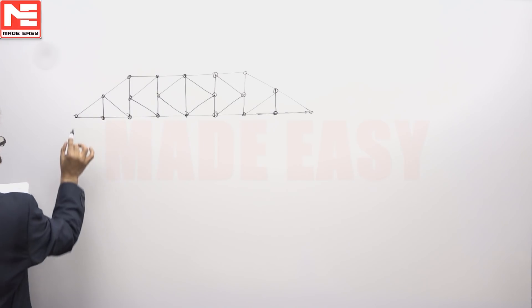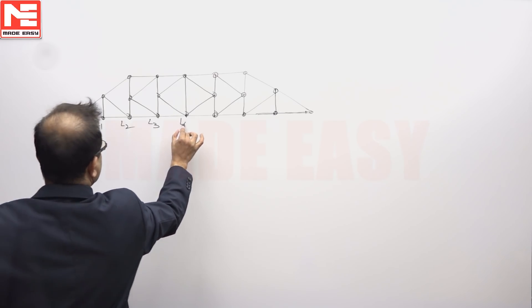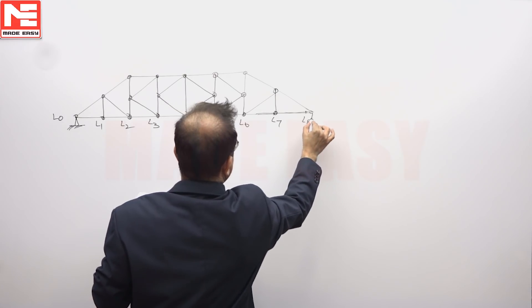This is our truss. This here: L0, L1, L2, L3, L4, L5, L6, L7, L8.